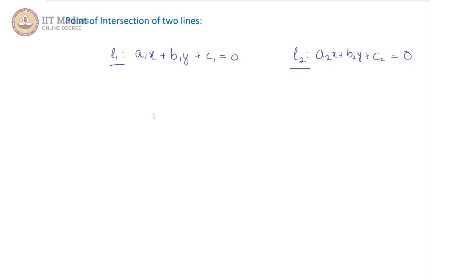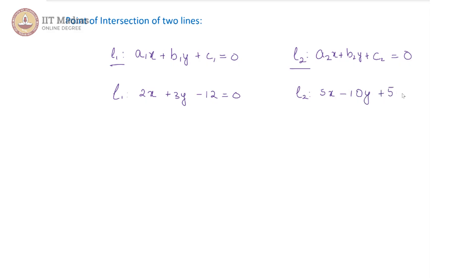It is easier to observe this process with examples. So let us take two example lines and find out where they intersect. For our examples, let us take L1 as 2x plus 3y minus 12 is equal to 0, whereas L2 is 5x minus 10y plus 5 is equal to 0. When we have these two line equations, how do we solve for x and y?